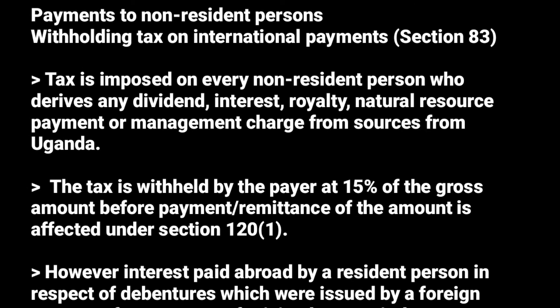Let's look at payments to non-resident persons. Withholding tax on international payments — tax is imposed on every non-resident person who derives any dividend, interest, royalty, annuity, natural resource payment, or management charge from sources within Uganda. This tax is supposed to be withheld by the payer at a rate of 15% of the gross amount, according to Section 120 of the Income Tax Act.